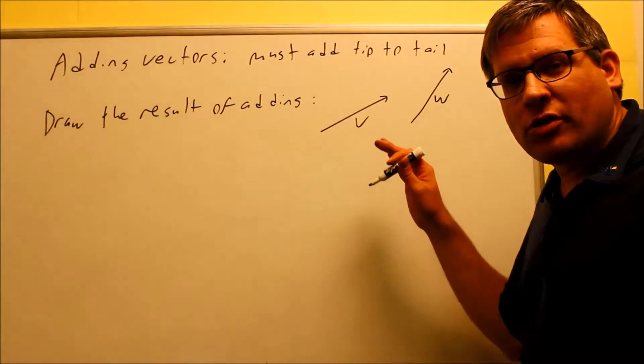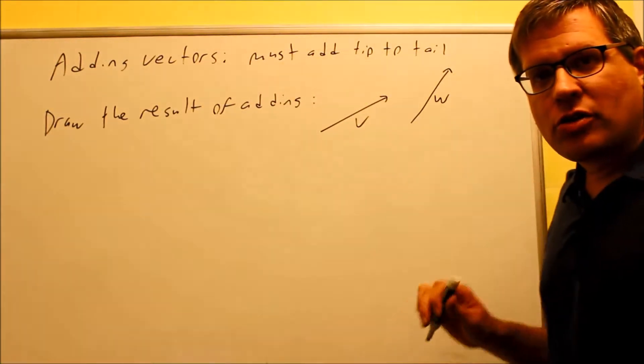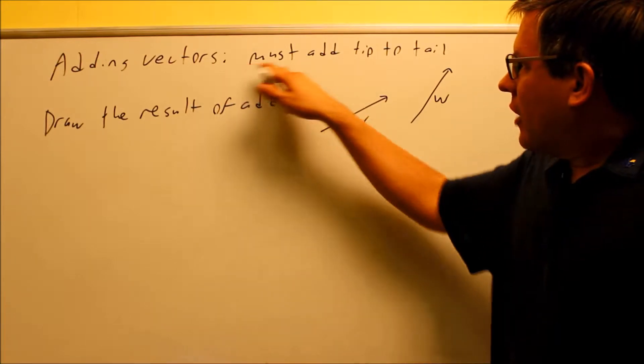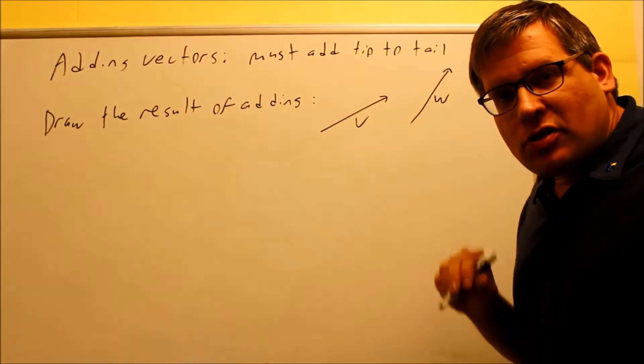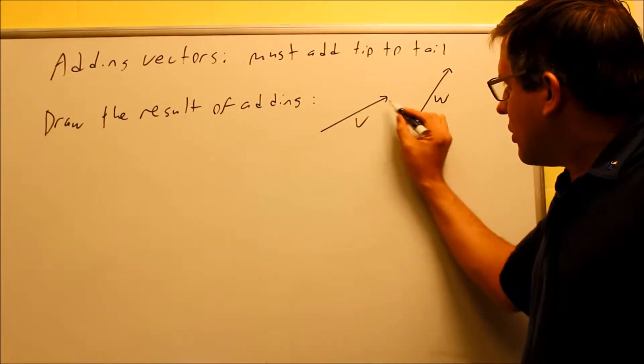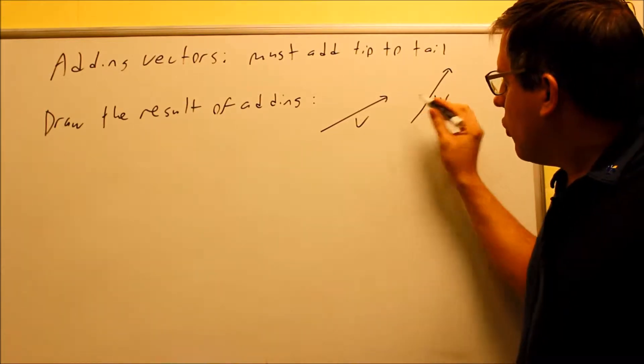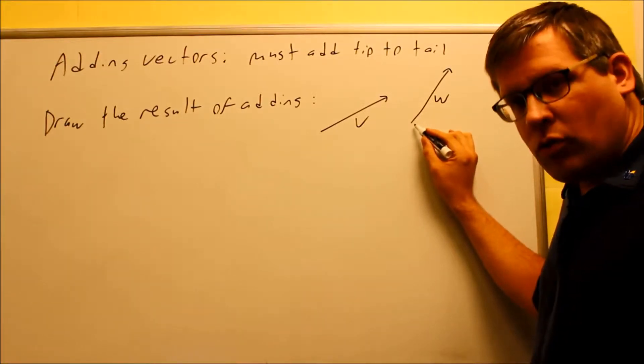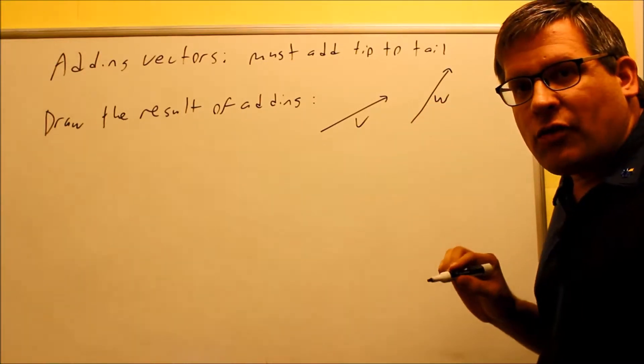The next concept with vectors is adding vectors together. We're going to do this pictorially. In order to add vectors, you have to add them tip to tail. That means the tip of the vector is the arrowhead, we need to connect it to the tail of the other one. That's the only way you're allowed to add vectors.